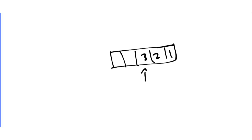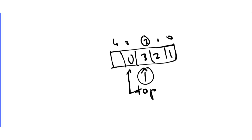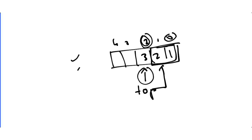If we insert elements one, two, three, the top pointer stores the location of the last inserted element. The array has positions zero, one, two, three, four. To insert, we move top forward and place the element; to delete, we move top back. For display, we start from the top and move down to zero, printing each element.